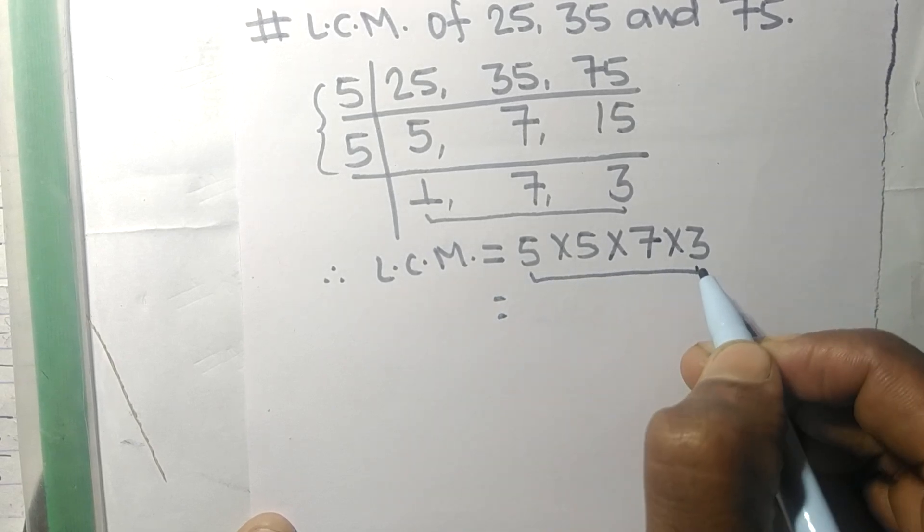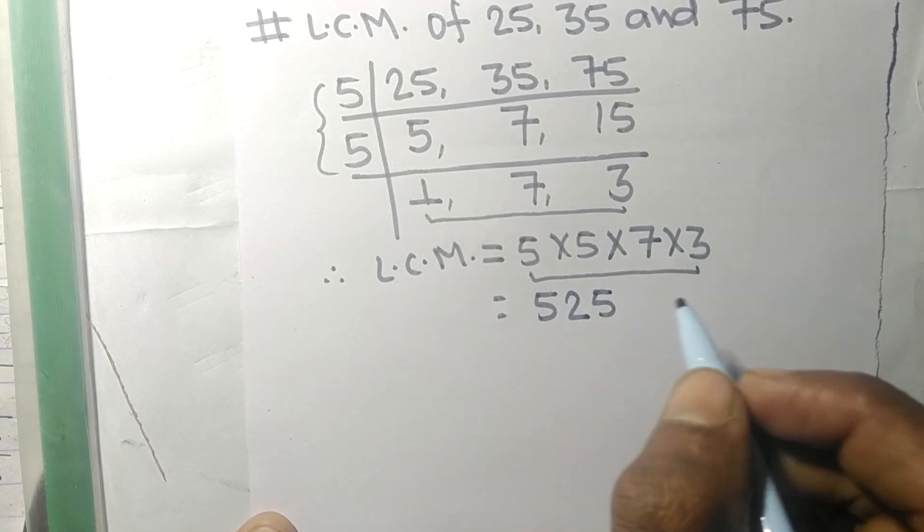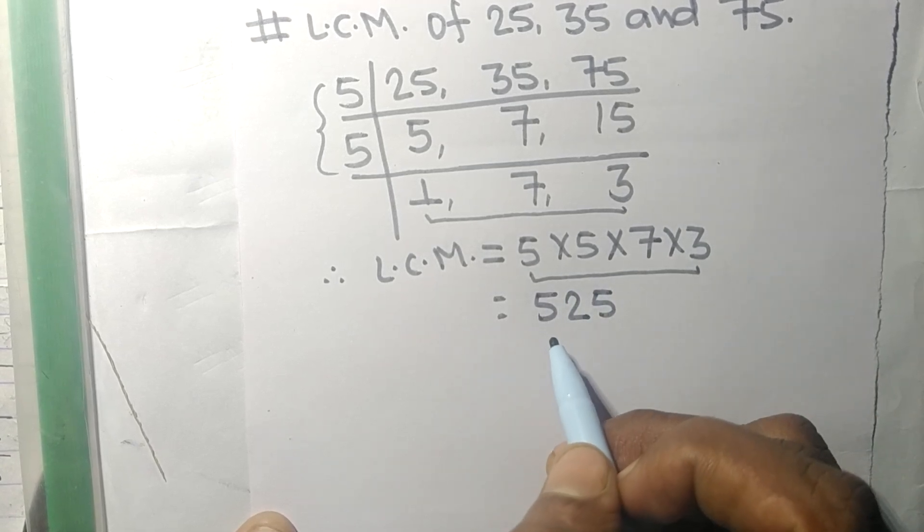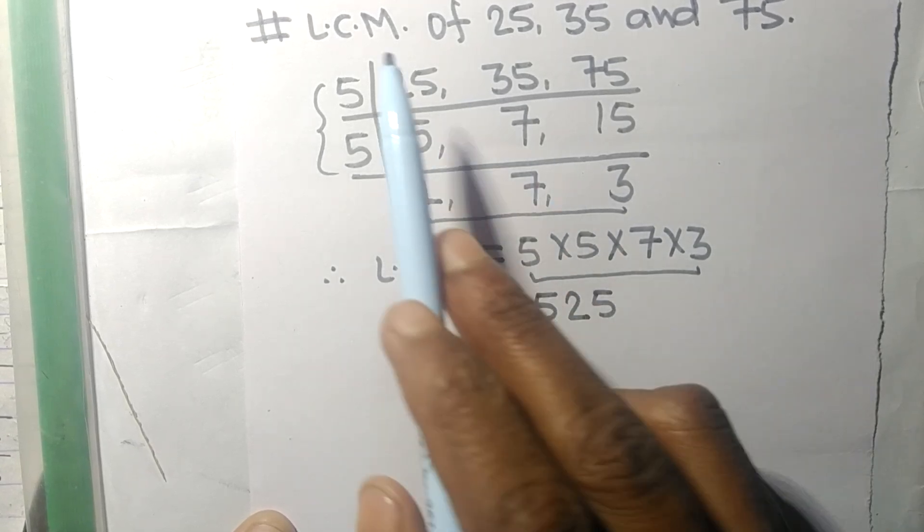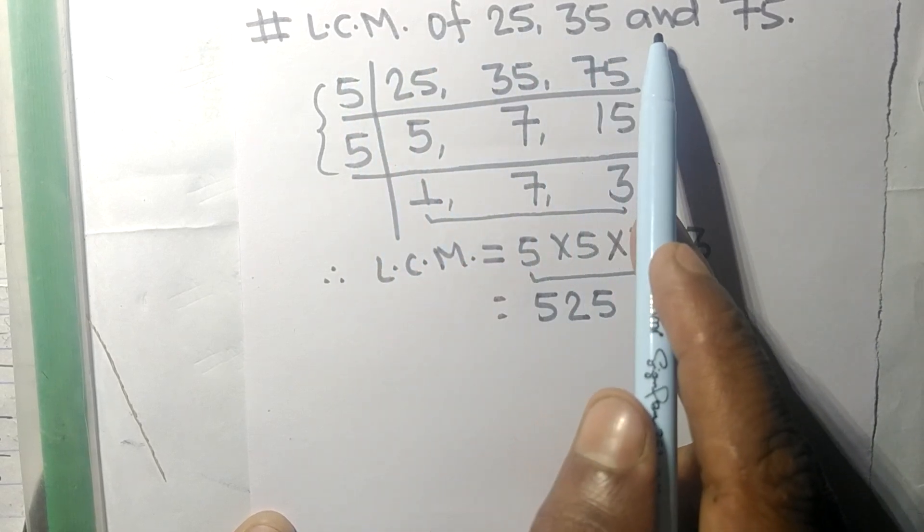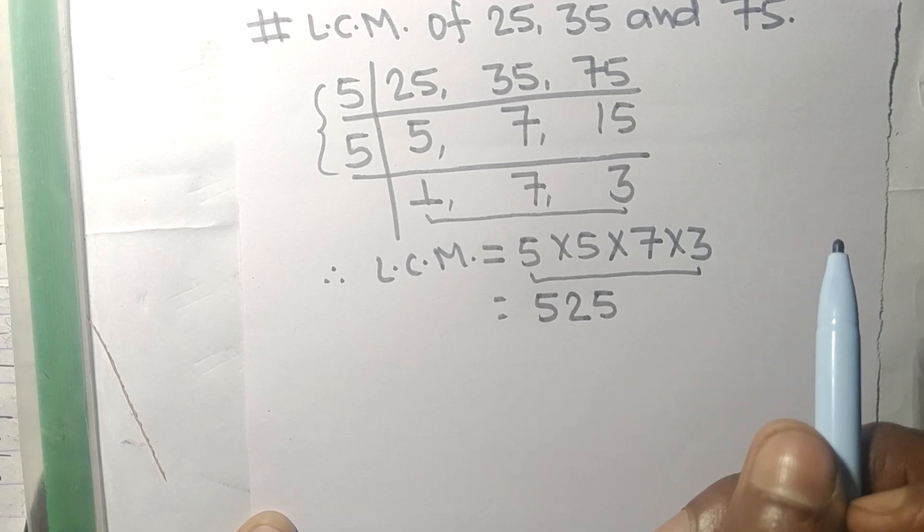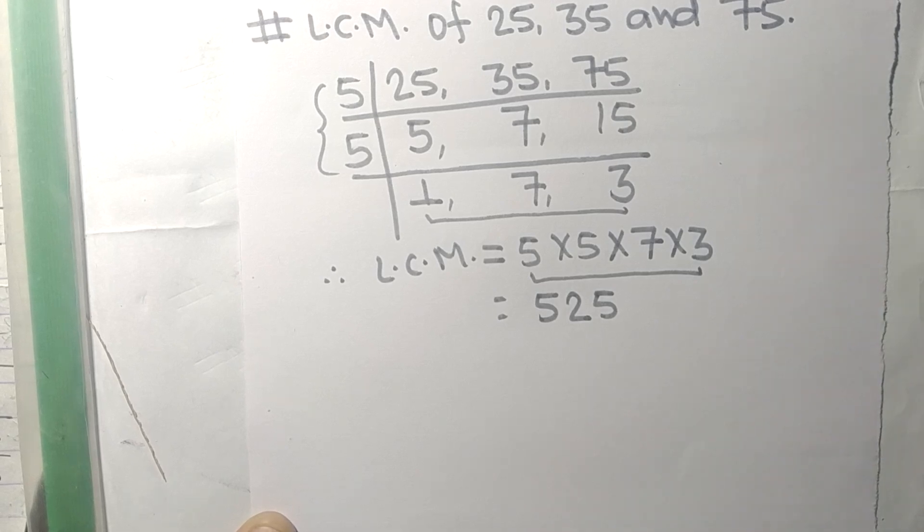So 525 is the LCM of 25, 35, and 75. This much for today, and thanks for watching.